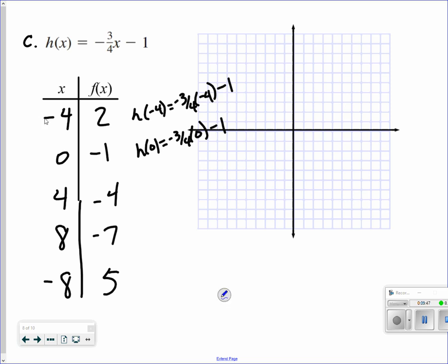If I plug 0 into the h function, I would get negative 1. If I plug in 4, I would get negative 4. If I plug in 8, I would get negative 7. If I plug in negative 8, I would get 5. Graphing those points: negative 4, positive 2; 0, negative 1; 4, negative 4; 8, negative 7; negative 8, 5. And that will make a linear function for the h of x function.